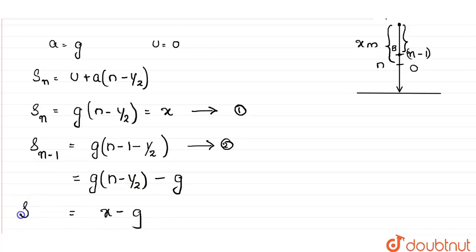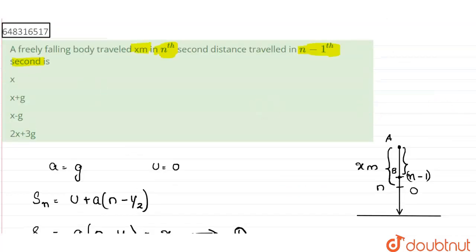So the distance traveled by the body in n minus 1 seconds would be equal to x minus g. So our answer is x minus g. The correct answer is the third option, x minus g. Thank you.